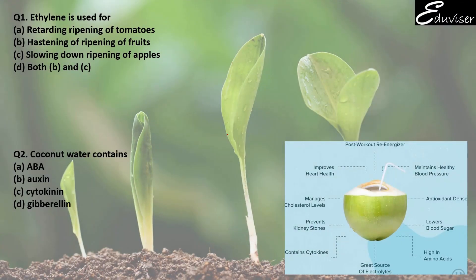So question number 1: ethylene is used for. Ethylene is a type of hormone. In plant growth and development, you get 5 types of hormones: ABA (abscisic acid), auxin, cytokinin, gibberellic acid, and lastly ethylene.